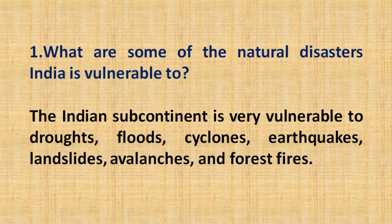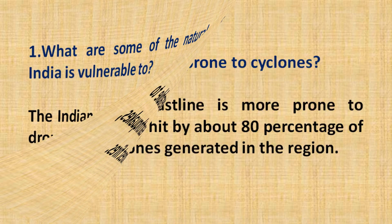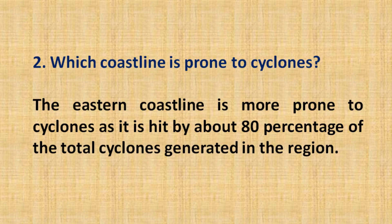Let us move on to the last part of the lecture: questions and answers discussion. Question one: What are some of the natural disasters India is vulnerable to? Answer: The Indian subcontinent is very vulnerable to droughts, floods, cyclones, earthquakes, landslides, avalanches and forest fires. Question two: Which coastline is prone to cyclones? Answer: The eastern coastline is more prone to cyclones, as it is hit by about 80% of the total cyclones generated in the region.